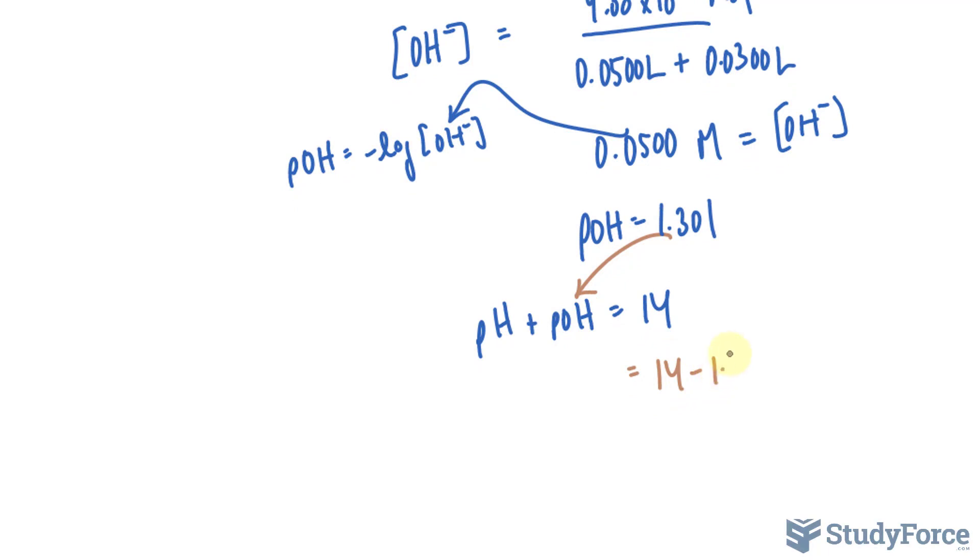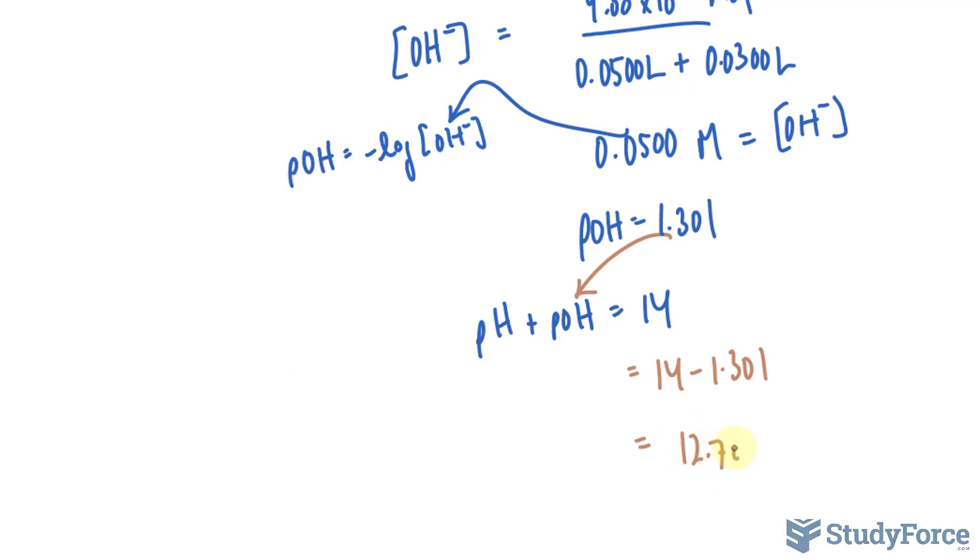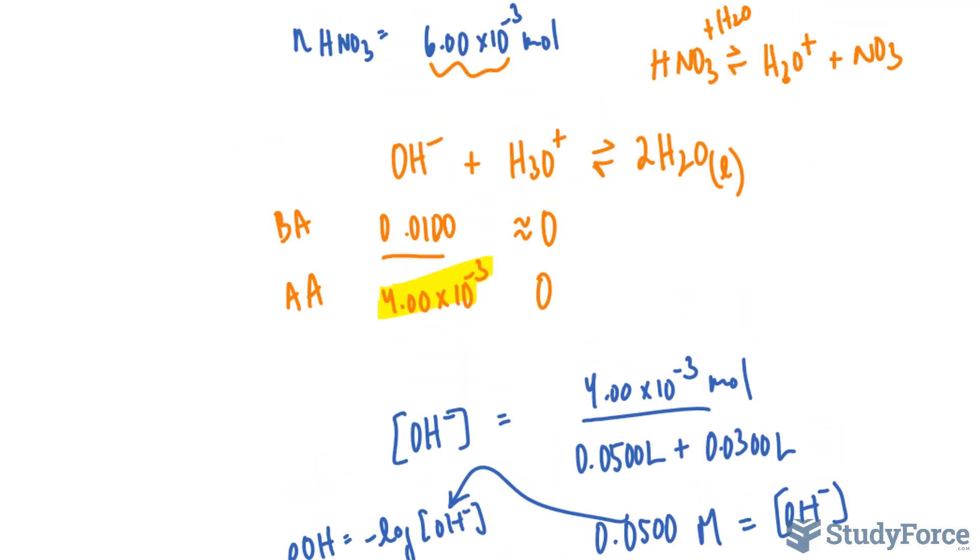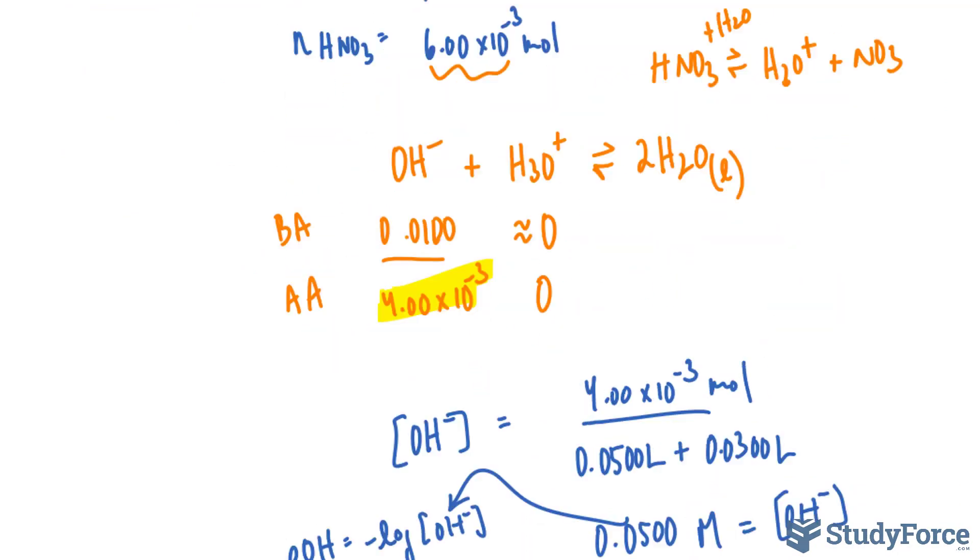So 14 minus 1.301, and that's equal to 12.70. We're rounding to two significant figures after this decimal place, because that's what the question asked for. That right there represents the pH.